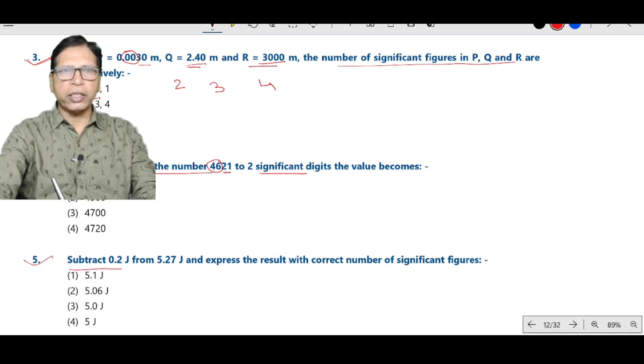Now question number 5. Subtract 0.2 from 5.27. So this is minus 0.2. This is 5.07. So this is 5.1. This option is correct.